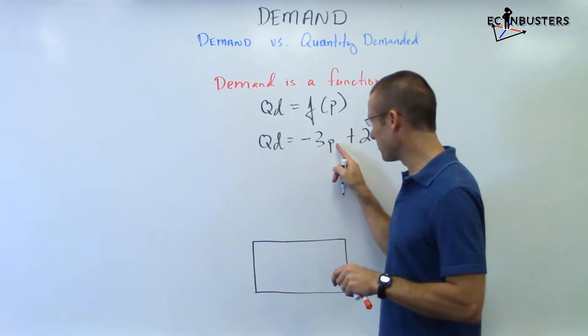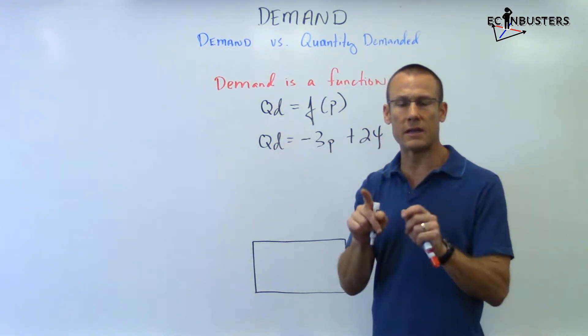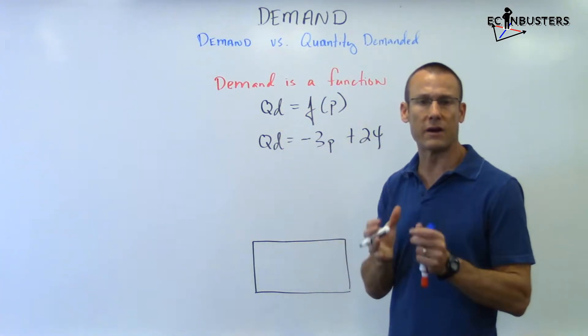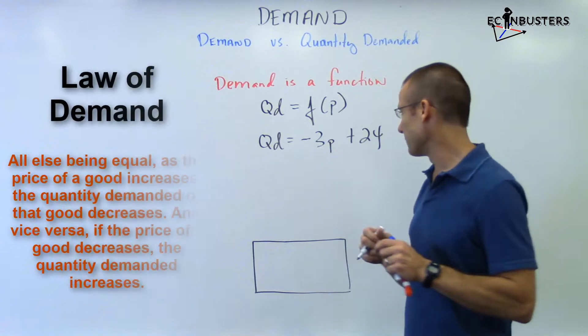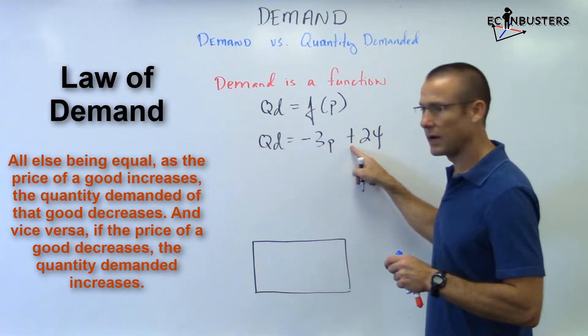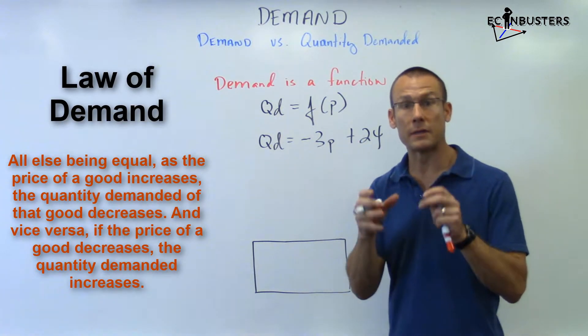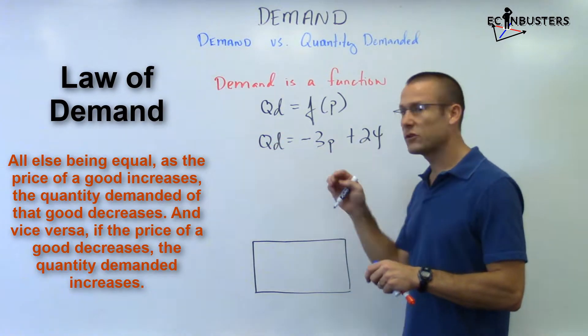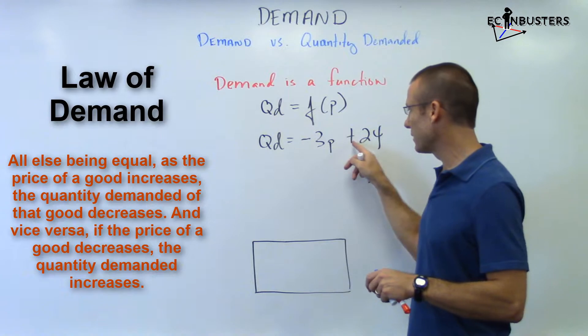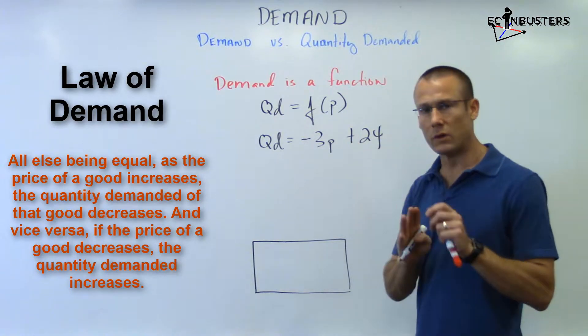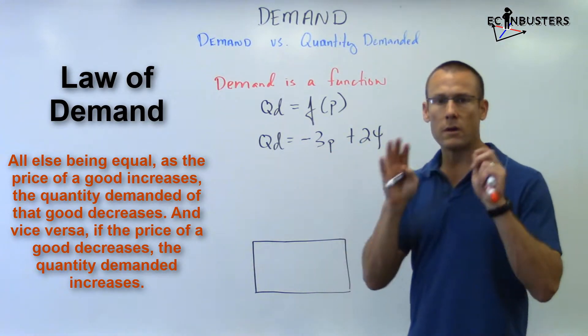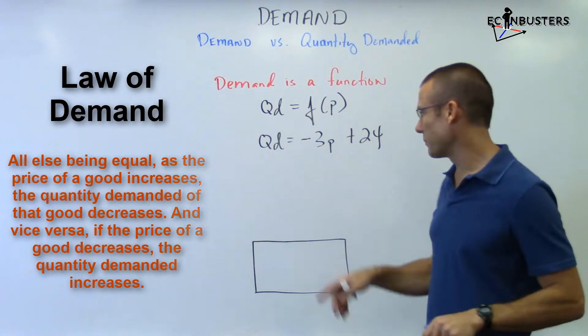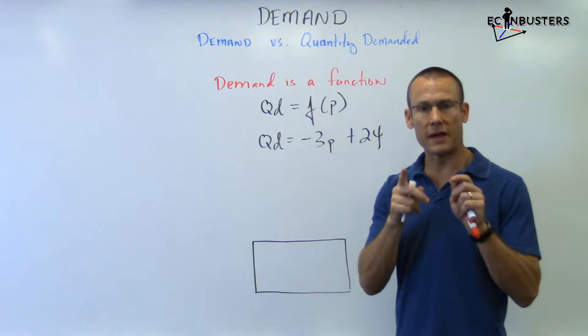That negative is saying the relationship between P and QD is a negative relationship. When price goes up, quantity demanded is going down and vice versa. That's the law of demand. That positive right there, it's got to be there. Why? Because this is a good, not a bad. And what do we mean by it's a good? If price went to zero, the quantity demanded would be a positive amount. So once again, three and 24 made up, could pick any numbers. The negative has to be there. That's the law of demand. The positive has to be there. That's what makes this a good.